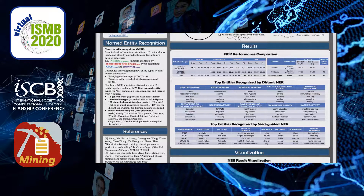Looking at the results, we first compare on general types such as gene, chemical, and disease on this COVID-19 dataset. Our method can outperform existing methods such as SciSpacy by a large margin. Moreover, on benchmark BioNER datasets, our method also outperforms the same baselines by a large margin. Additionally, we can annotate many more entity types without any human annotation.